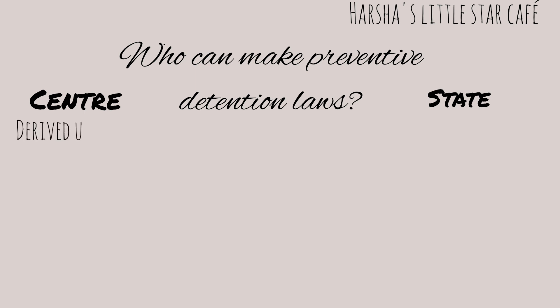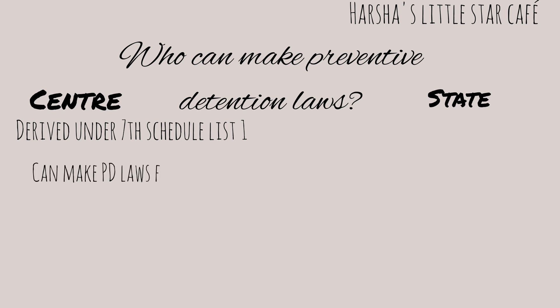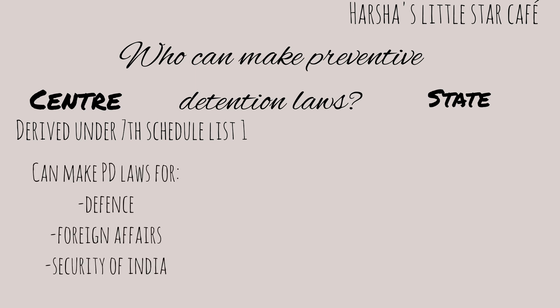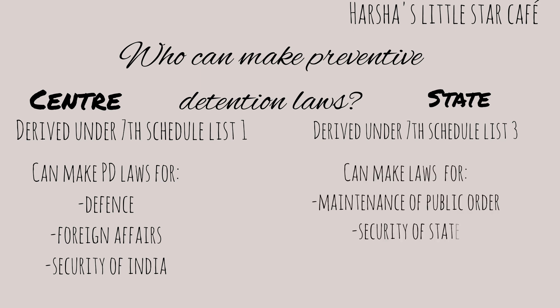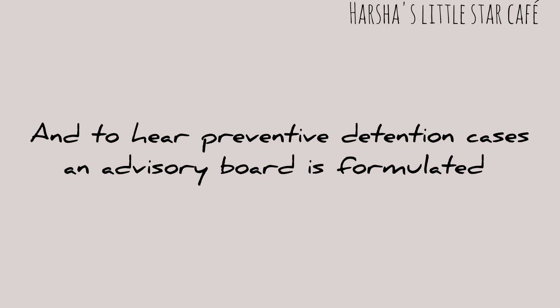Both the centre and state have the power to formulate preventive detention laws. The centre's power is derived under the 7th Schedule, List 1 — they have exclusive power to make preventive detention laws for defence, foreign affairs, and security of India. The state has concurrent power under the 7th Schedule, List 3, allowing it to make laws along with the centre for maintenance of public order, security of state, and maintenance of essential services.